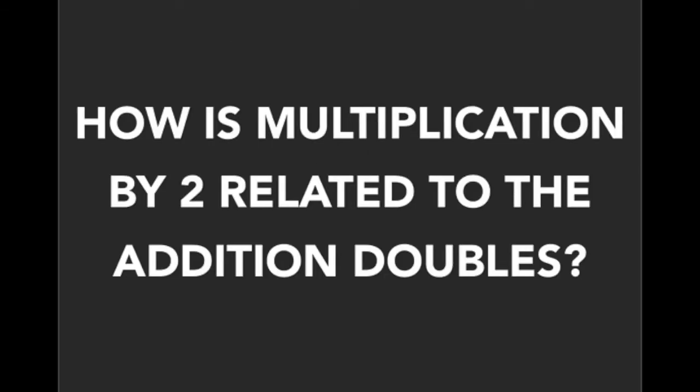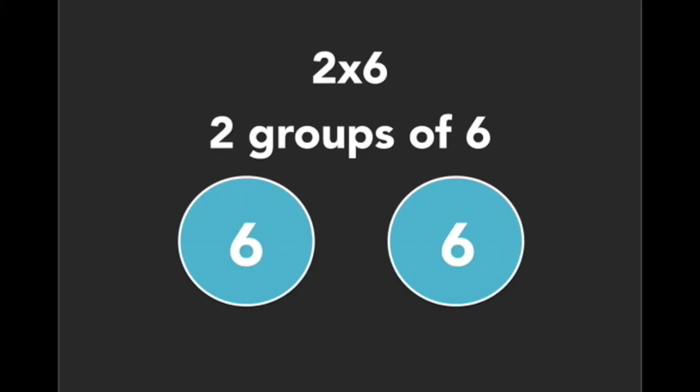Now how is multiplication by two related to the addition doubles? Well let's take a quick look. So for instance with the equation 2 times 6, this is essentially saying two groups of 6. So we can illustrate that like this. Now in order to find the product of 2 times 6, we can really just take those two groups and add them together to make 12. So as you can see, that equals an addition doubles equation, the double of 6.